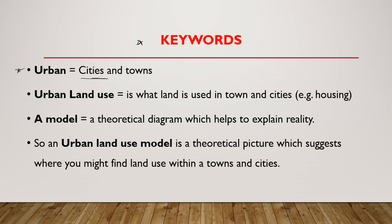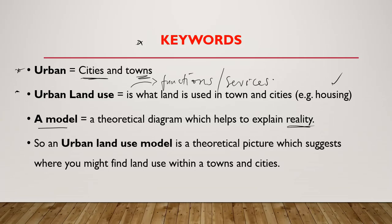Some keywords: 'urban' has to do with towns and cities. Urban land use is what the land is used for in towns and cities — for example, housing. Urban land use has to do mainly with the settlement functions and services provided by the settlement. A model is a theoretical diagram which helps to explain reality — a diagram to explain how a settlement looks and is arranged.